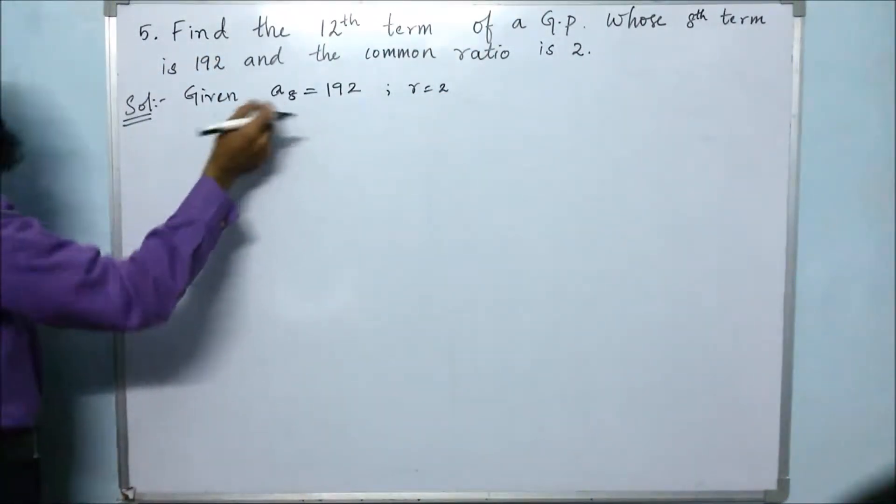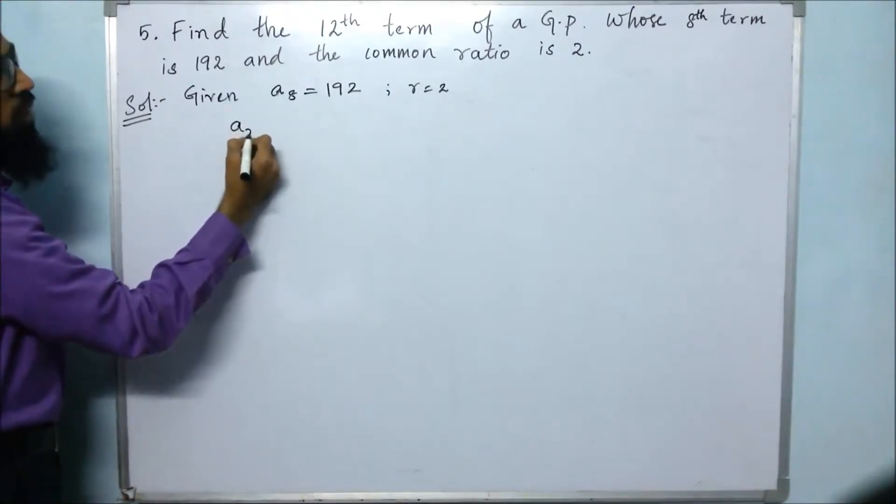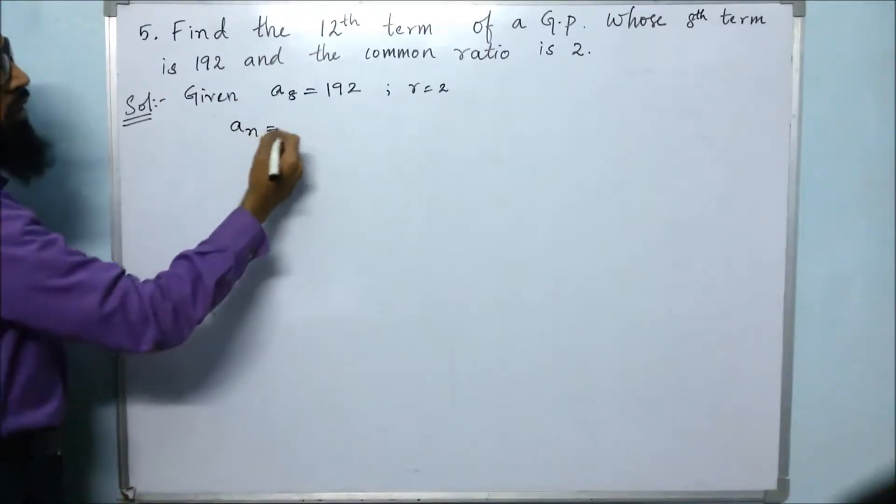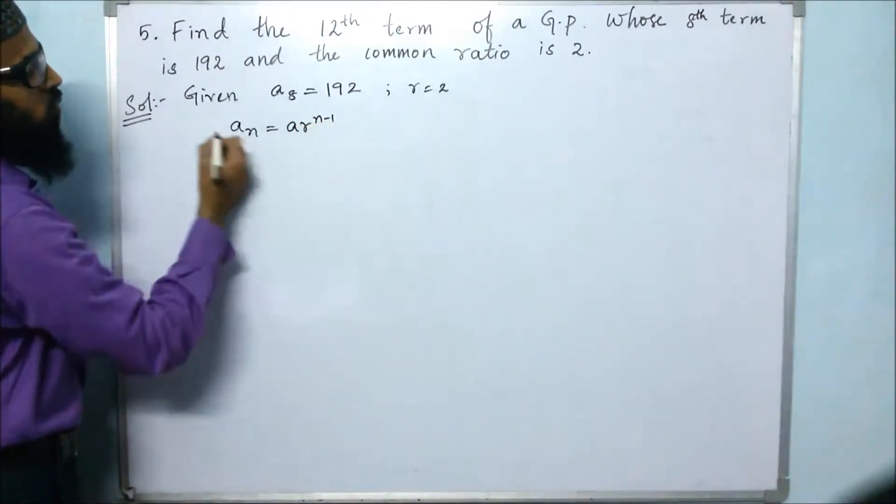Then next we will start. We know the nth term formula. What is the formula for nth term in GP? It is a times r to the power of n minus 1.